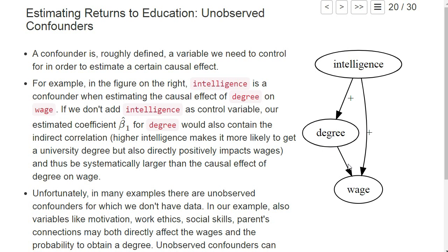That's convenient if you want to advertise that everyone should go to university, because without controlling for things like intelligence it seems as if the degree has an even bigger impact on wages than it actually has. But if you really want to do science and estimate the causal effect, we need to deal with this problem. Ideally we would have data for all these possible variables — often called unobserved confounders, because they confound our estimate of the causal effect — but it's really tricky to get data for them.